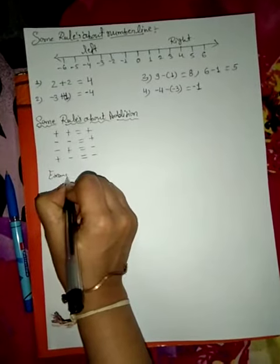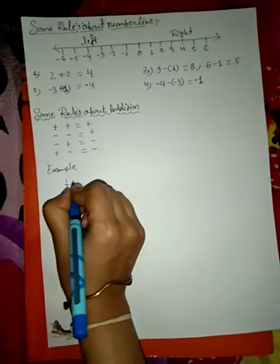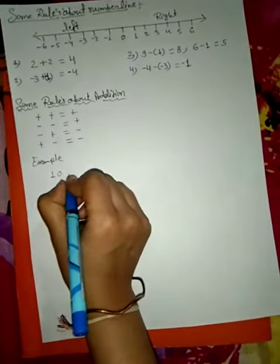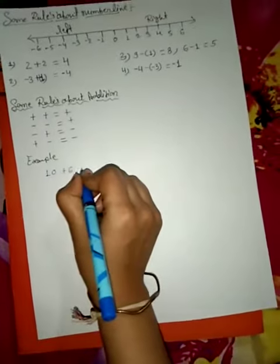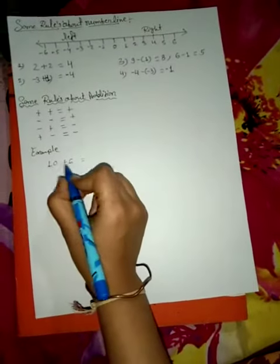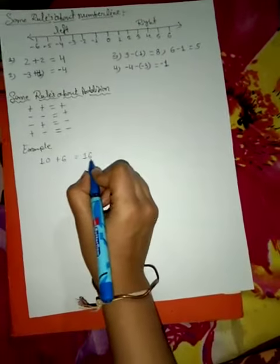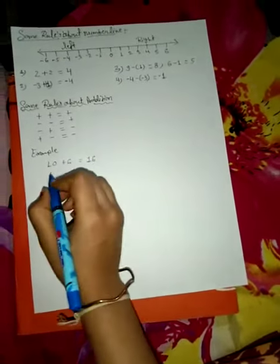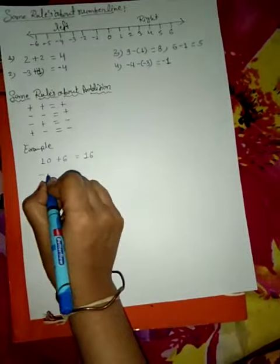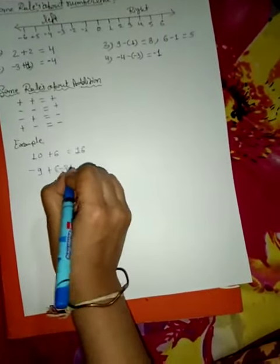Let's take some examples. 10 plus 6: we add 10 plus 6, both are positive numbers, so 10 plus 6 is 16. 16 is also a positive number. Now let's discuss minus 9 plus minus 2.